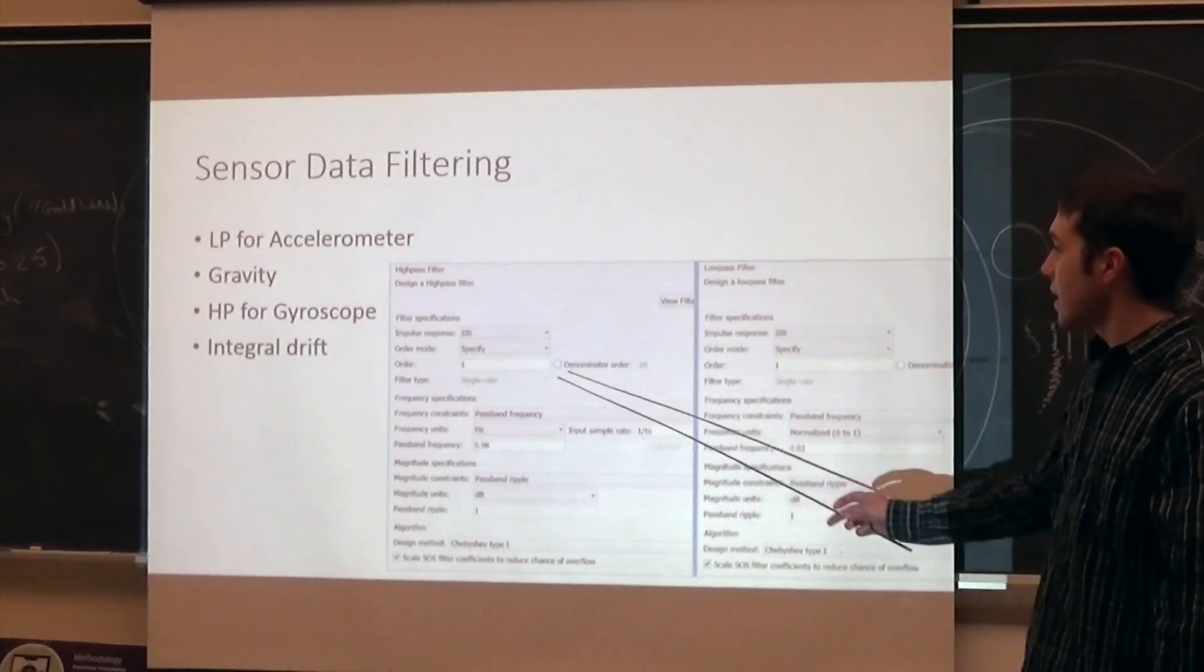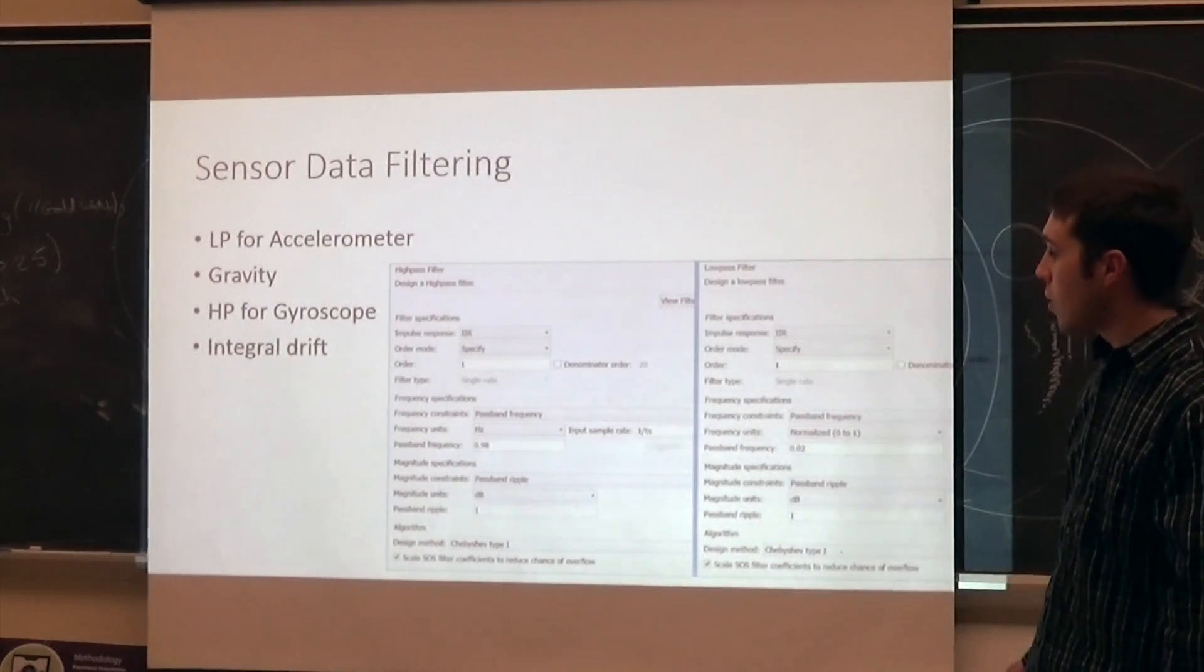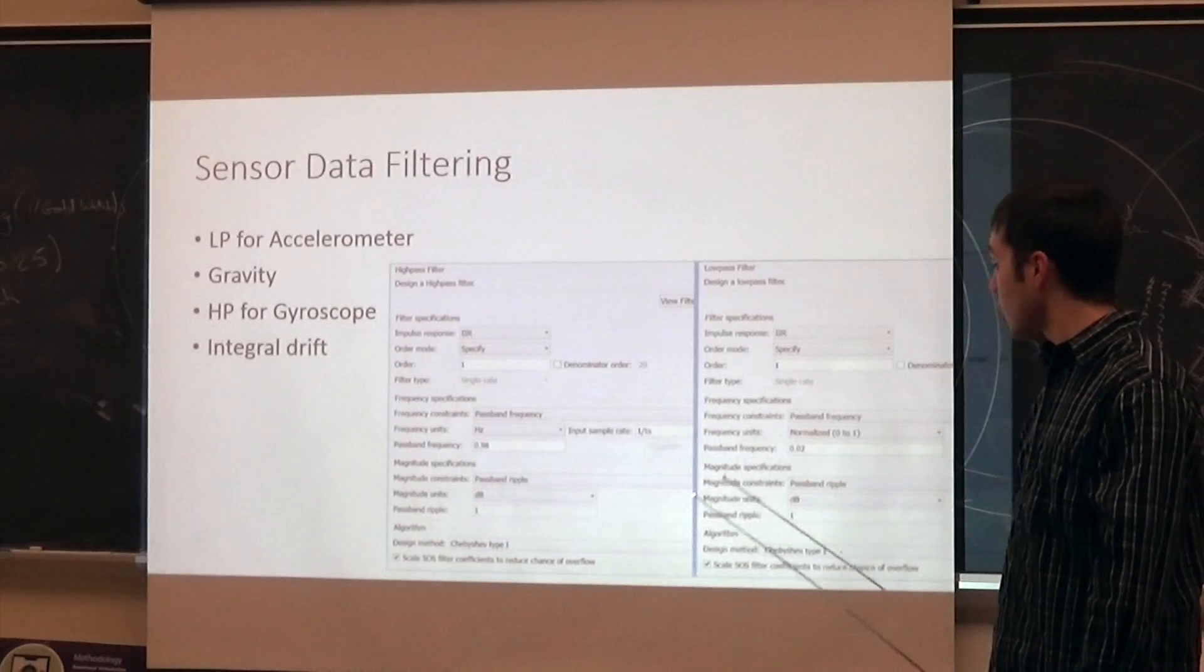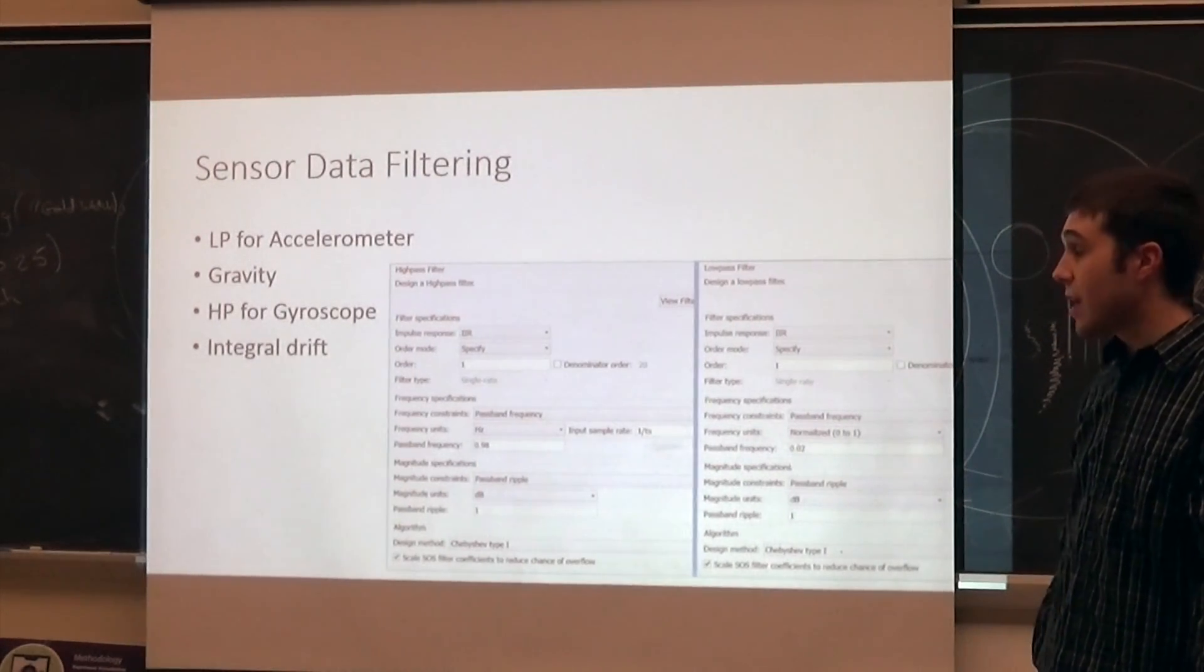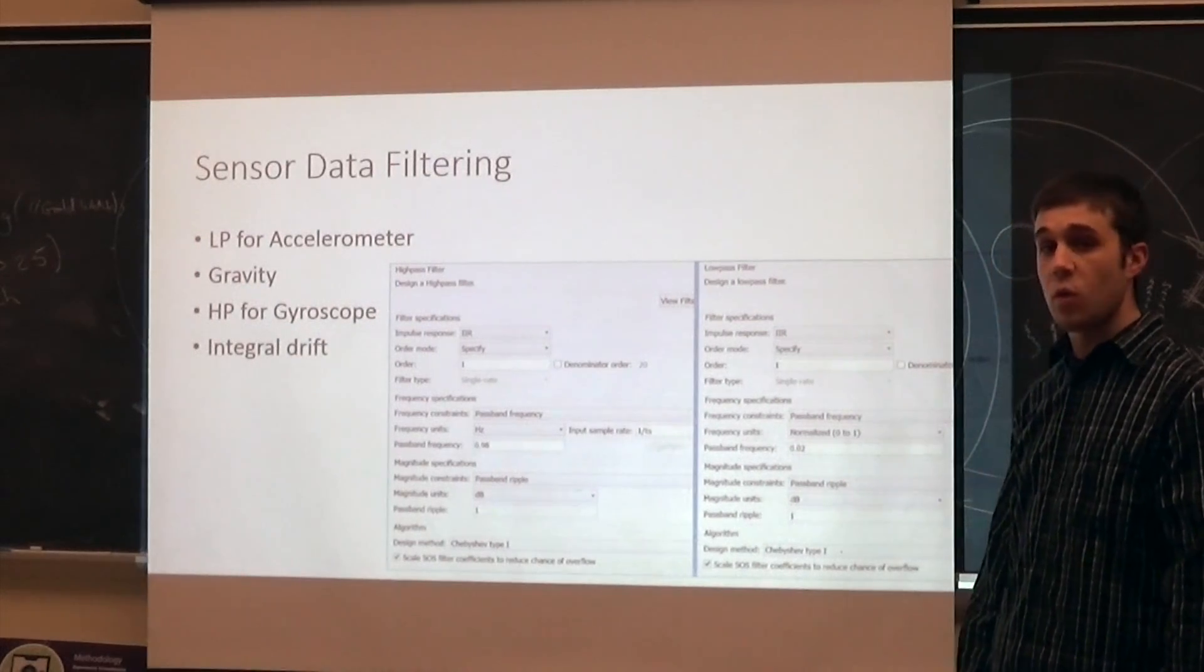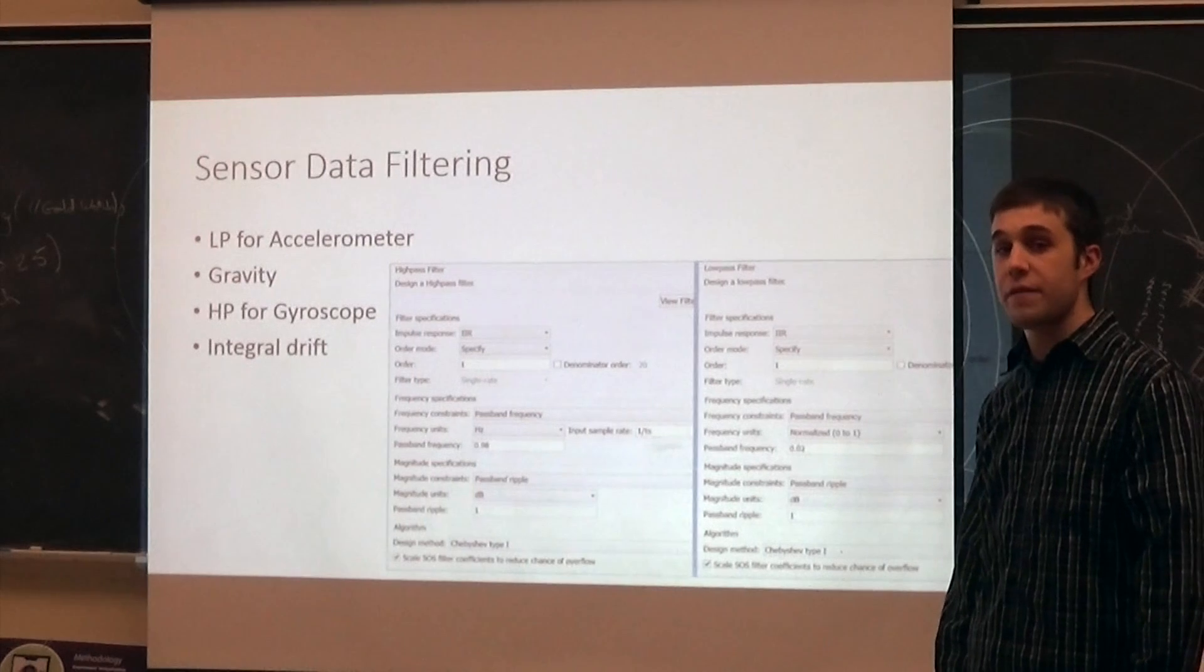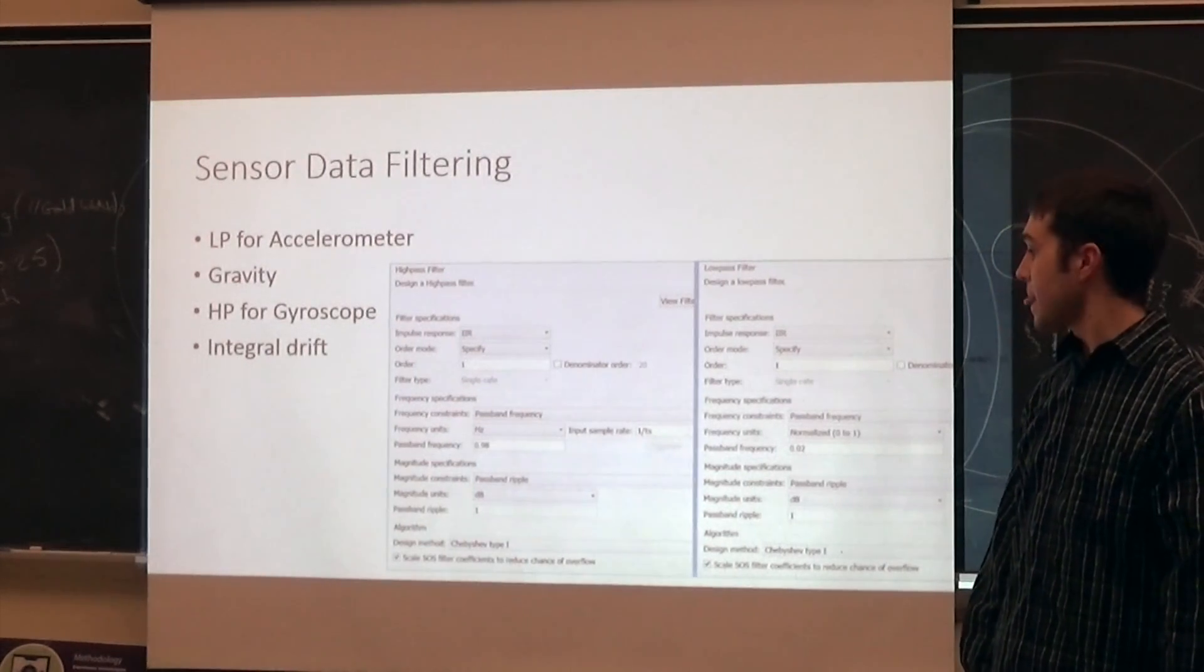Really quickly, I just included some screenshots from our filters, the high-pass and the low-pass. Our pass-band frequency for the high-pass filter is 0.98, and our low-pass pass-band frequency is 0.02. If you'll notice, they add up to one, and they have to, because if they added up to more than one or less than one, we would get an accumulation of error or not enough data going on at the inputs of the PID.